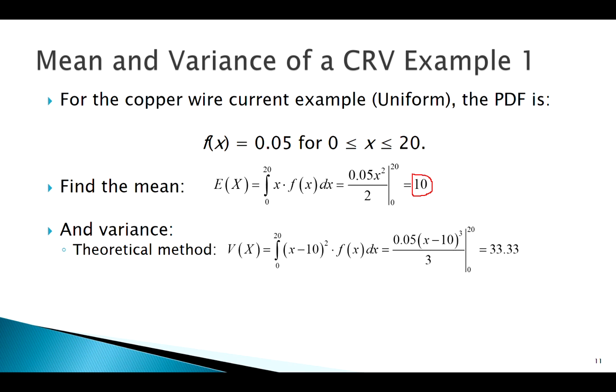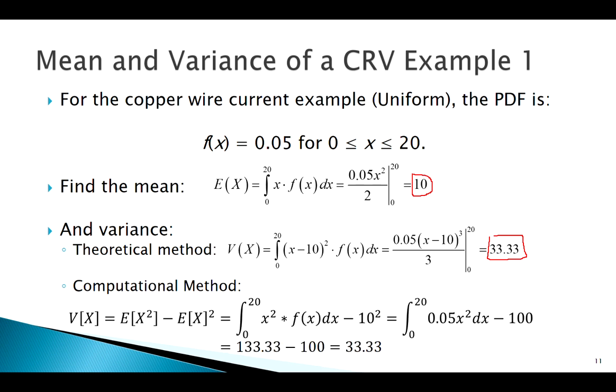You can do it with the theoretical approach, doing this the long way. I probably wouldn't do that, this here is using substitution. But what we really want to show is our answer to our theoretical method should be the same as the computational formula. Using the computational formula, setting it up: x squared times the PDF from 0 to 20, our lower bound to our upper bound.